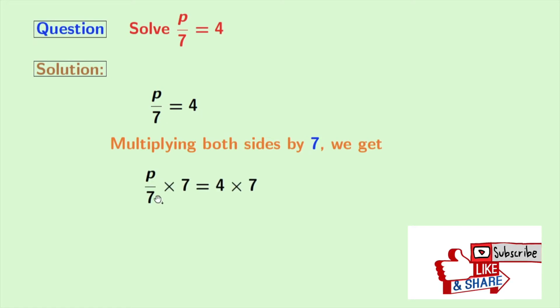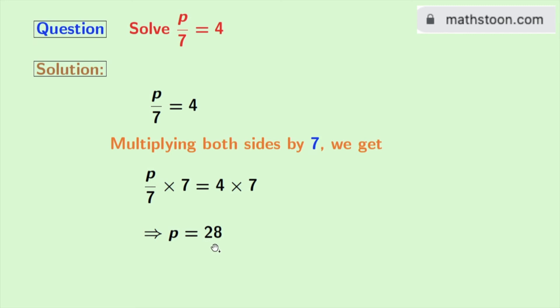p by 7 times 7 is equal to 4 times 7. In the left hand side 7 gets cancelled and we are left with p. And as 4 times 7 is 28, so in the right hand side we have 28. So p is equal to 28 is our final answer.